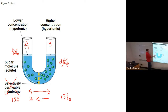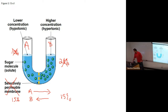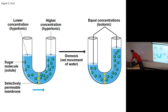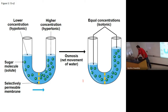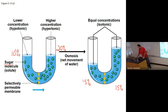It just wants things to be equal. As water leaves one side it goes to the other — the 10% concentration goes up because there's less and less water, and as more water arrives on the other side that number goes down, until they both hit 15%. So we started with 10% and 20%, osmosis did its magic, water moved, the solute didn't, and now we're at equilibrium at 15 and 15.